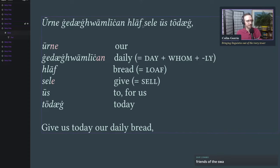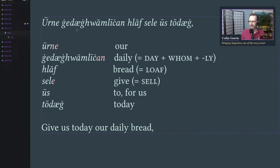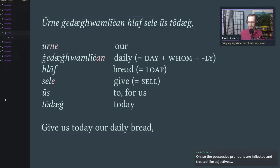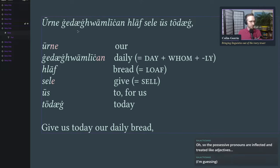'Urne yedai huamlichan hlaf, sele us todai' — 'give us today our daily bread.' In Old English word order it would be 'our daily bread, give us today.' 'Urne' is the accusative singular masculine form of 'ure,' which we had before — 'our.' 'Yedai huamlichan' means 'daily.' You can see 'dai' in there. The G with a dot on it is pronounced 'ya' — it was certainly pronounced 'ya.' Similarly, we put a dot on the C to indicate it was pronounced 'cha.' This has to do with palatalization of C and G before front vowels, like what happened in French, Italian, and Spanish.